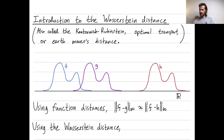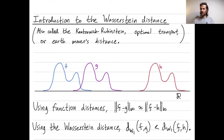By contrast, using the Wasserstein distance — we'll talk mostly about the one Wasserstein distance in this video — the one Wasserstein distance between f and g is actually much smaller than the one Wasserstein distance between f and h. Intuitively, you can see that if I wanted to move f to get g, I wouldn't have to move it as much as if I wanted to move f to get h.